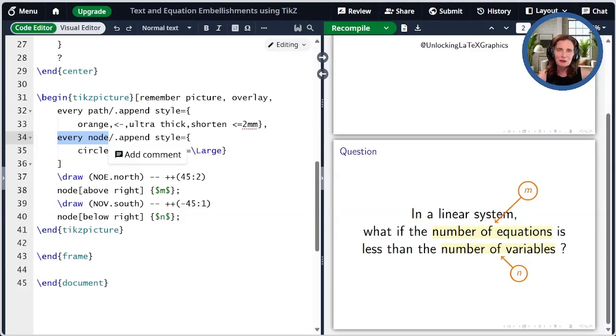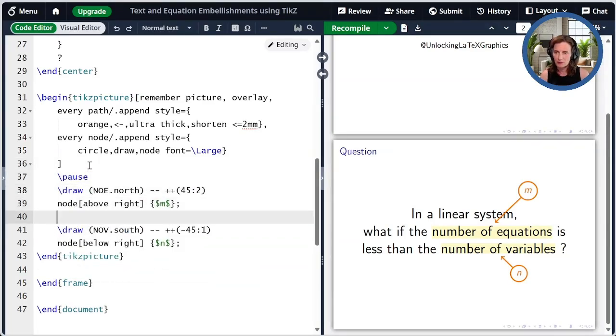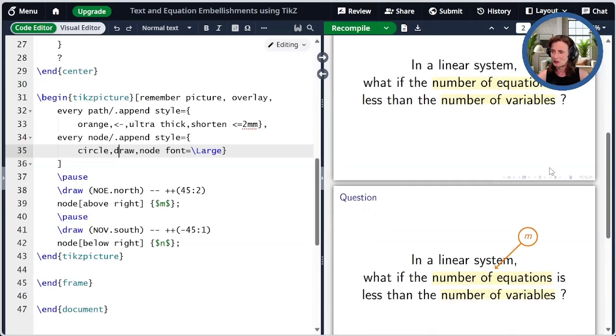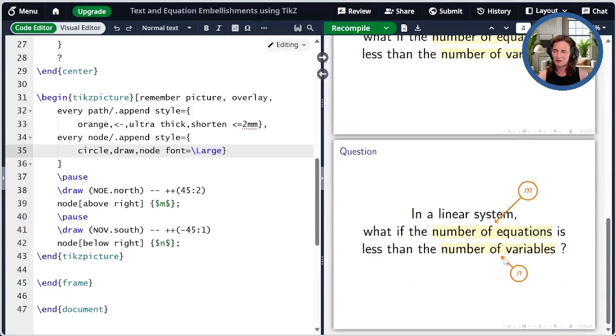One last thing I can do that's kind of fun inside of Beamer is you can actually use pause right inside of a TikZ picture environment and it will do this thing where it basically creates animation in your slide. It does this very manually by creating a separate slide. So in the first one I don't have that first embellishment. Now in the next slide I have the embellishment and then in the final slide I have this final embellishment. That's kind of a fun thing that you can do in Beamer and I just want to show that it works really well with TikZ.